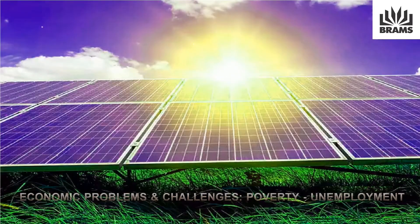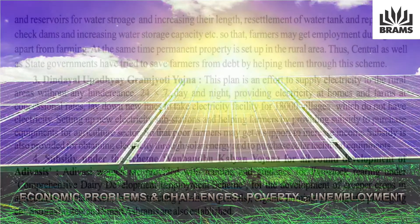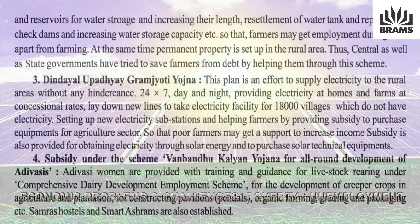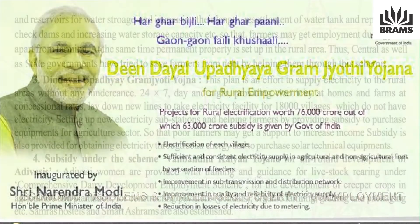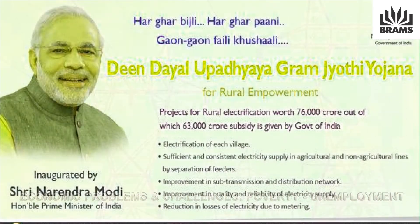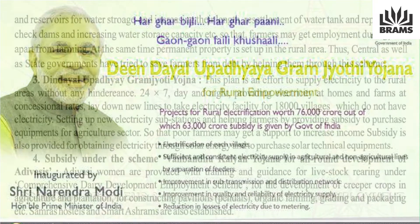Provisions are made to purchase solar technical equipment. The government is bringing electricity to 18,000 villages where there is currently no electricity. Farmers are being given subsidies at concessional rates so that they can use solar energy and work with modern technology.